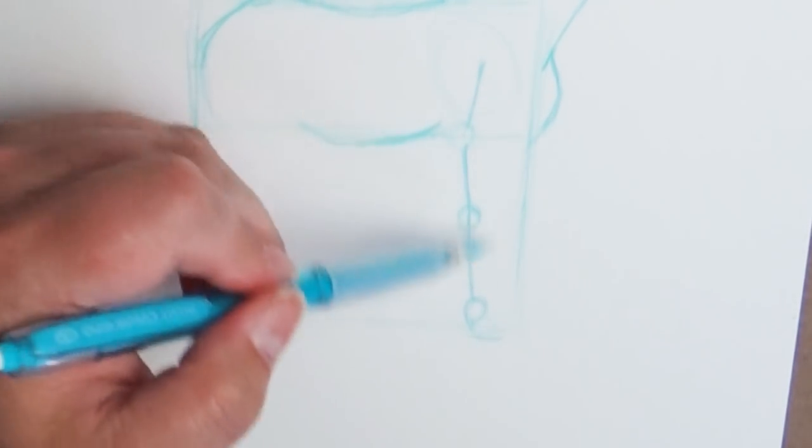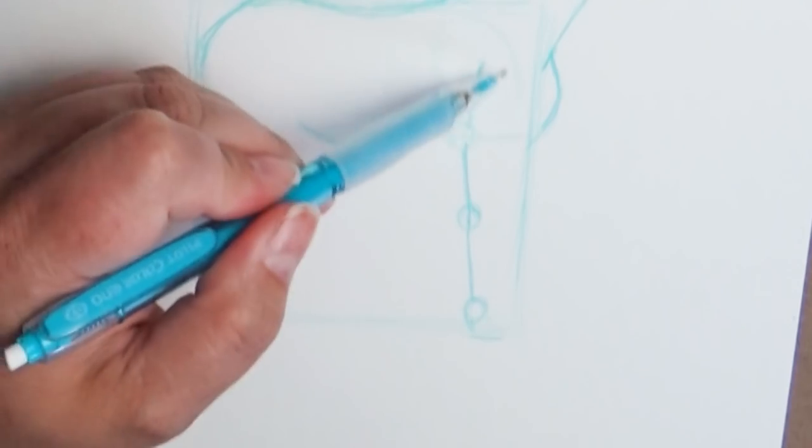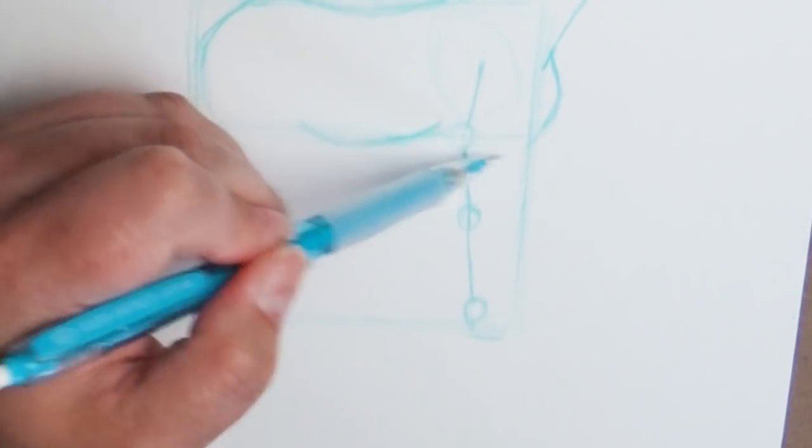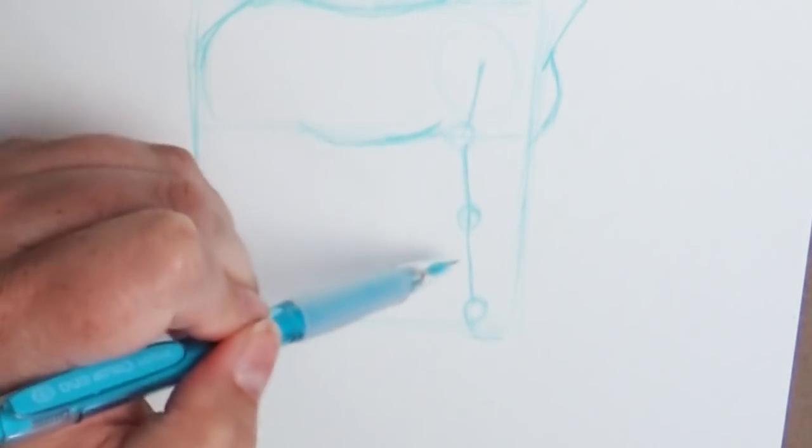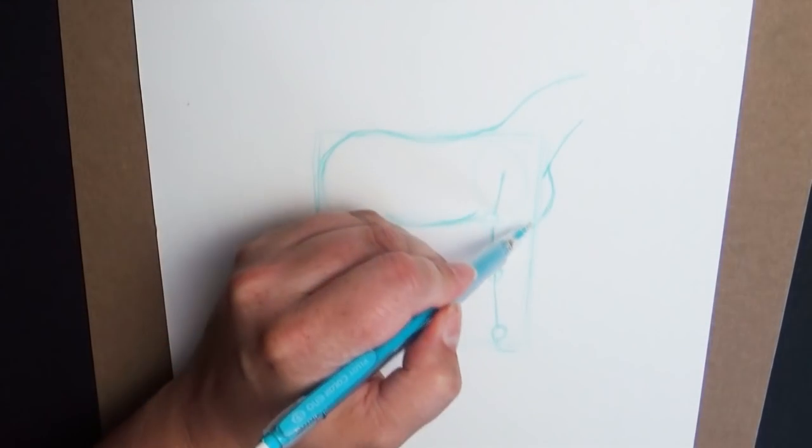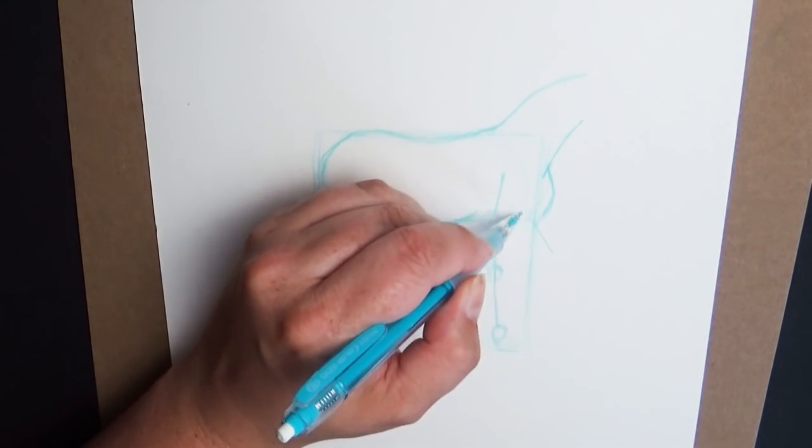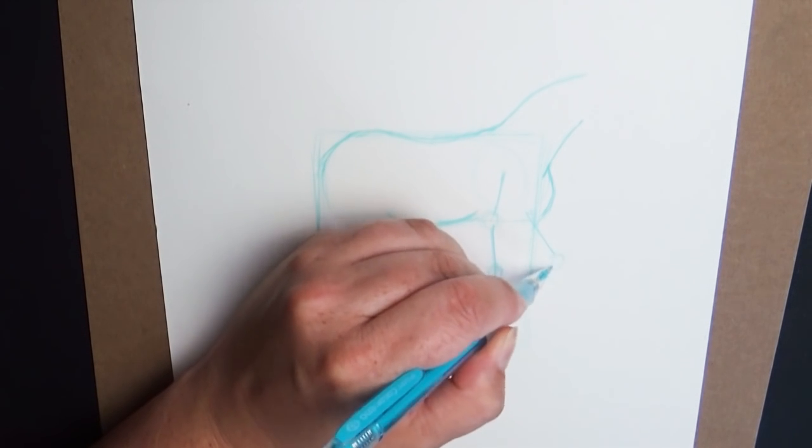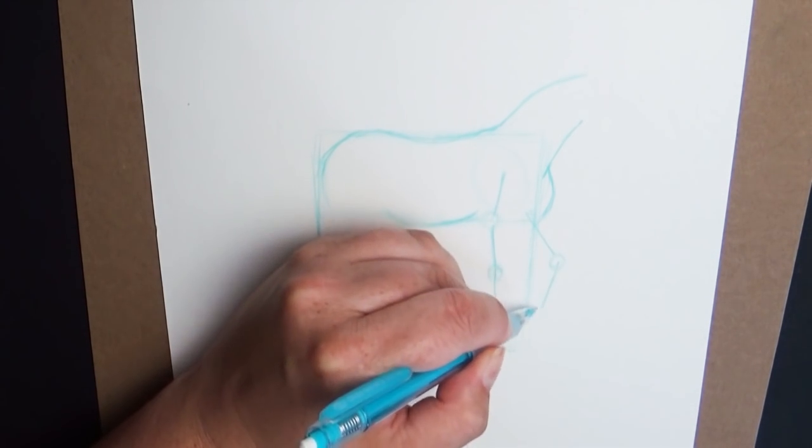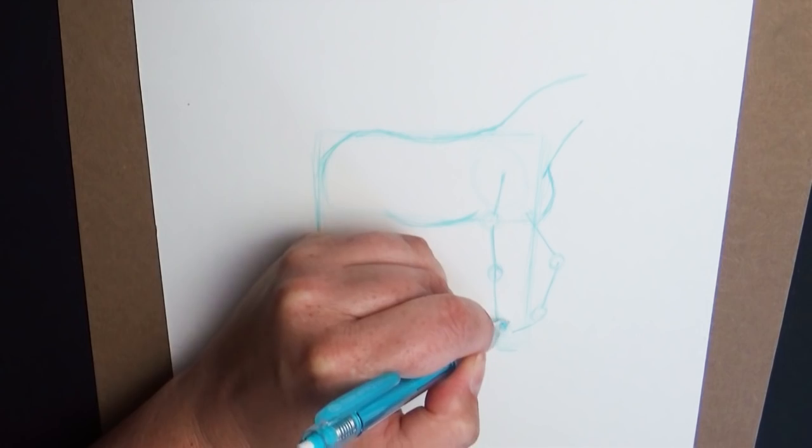And then coming down here to the ankle and then we'll put more detail into the foot there. Now the fun thing about this is that you can move this around any way you want. So this part here can bend, this part here can bend, this part here can bend, and this part here can bend. So let's bring this leg out on this side like it's walking. So here it comes off the shoulder to the knee, coming down to the ankle and bending back for the hoof.